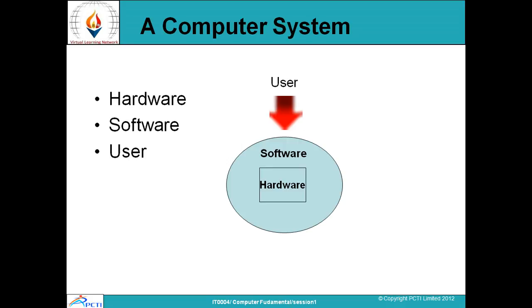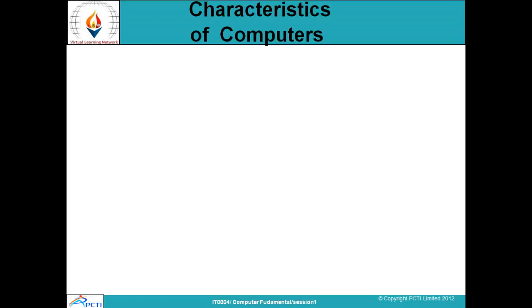We have different computer systems which include hardware and software. Software refers to the computer's applications, while hardware is anything that we can touch and feel physically. The function of processing is done by a user — an end user — which is a student or anybody who uses that application.